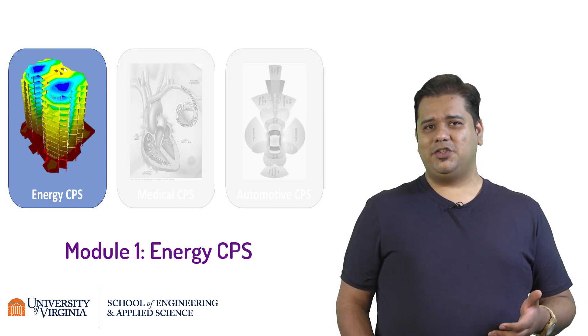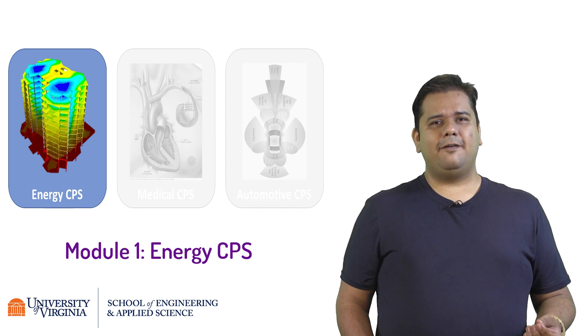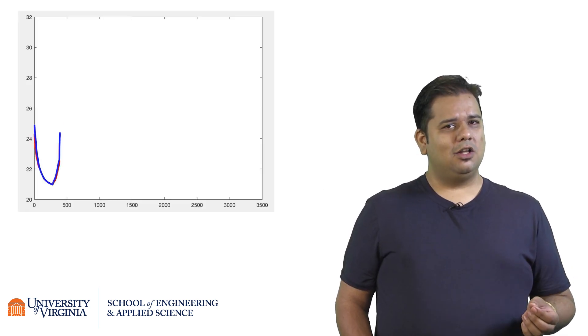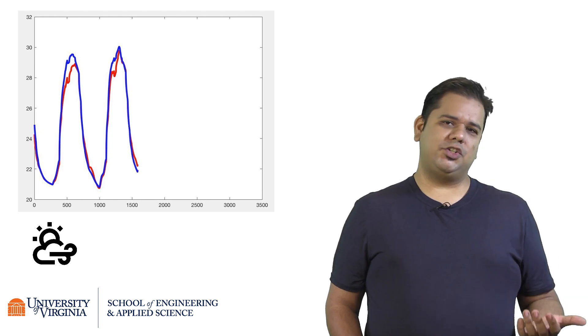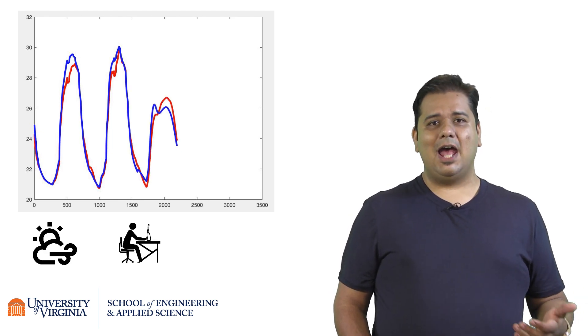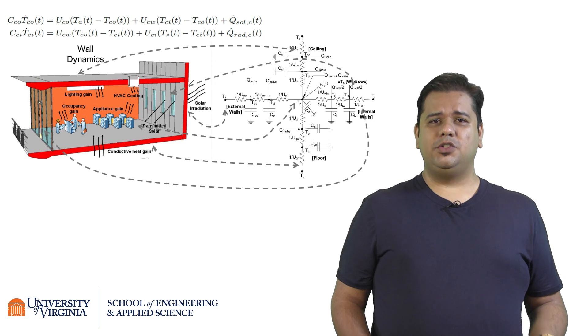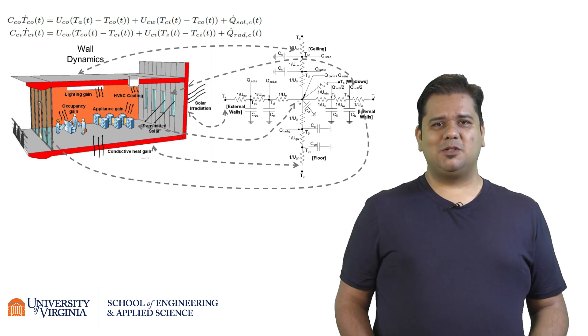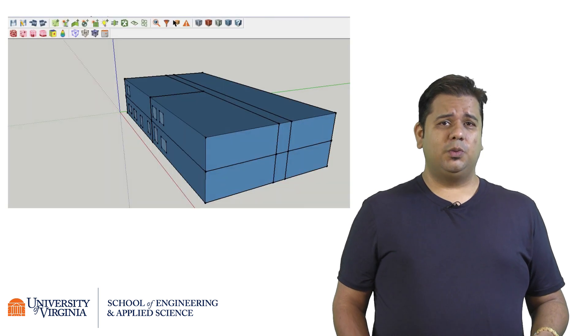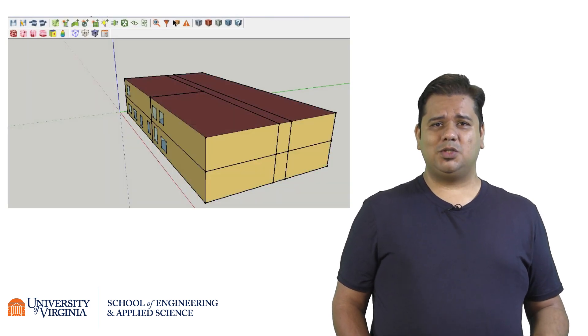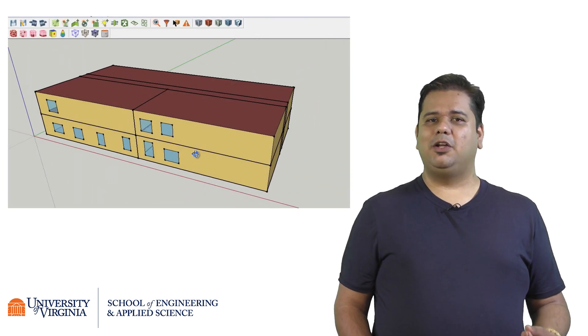We will begin with the Energy CPS module, where we will build a predictive model of how temperature inside a building varies due to environment conditions, occupant behavior, and building operations. You will learn how to use first principles of physics to model the dynamical thermal response of a building. You will also use a tool called EnergyPlus, which is a simulation tool for building automation experts.